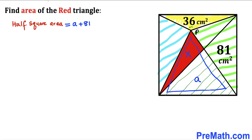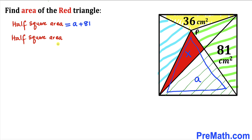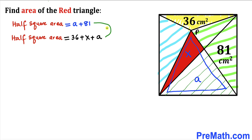We can see that point P is the common point for all the shaded triangles — the blue, green, yellow, and the other blue triangle. The sum of the areas of two opposite triangles also equals the half square area. Therefore: half square area equals 36 plus x plus a. Equating the right-hand sides gives us 36 plus x plus a equals a plus 81.